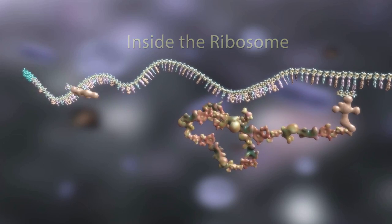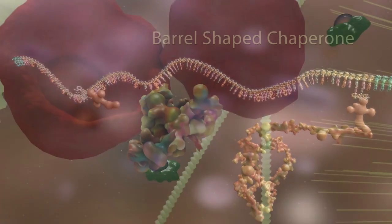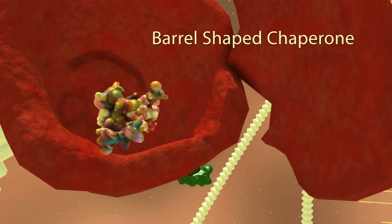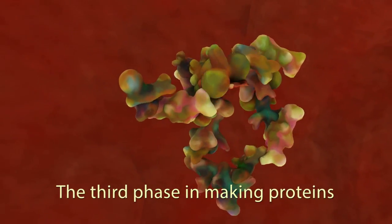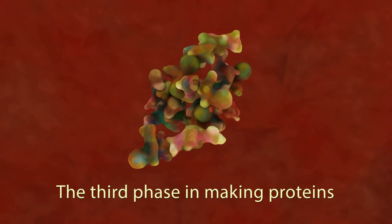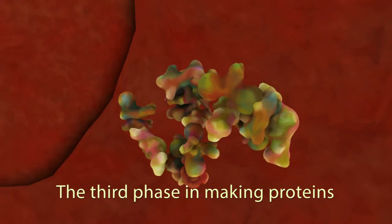These chaperones are commonly barrel shaped. The immaturely folded string of amino acids enters the chaperone and is folded into its proper shape. Then the chaperone releases the newly formed protein into the cell.